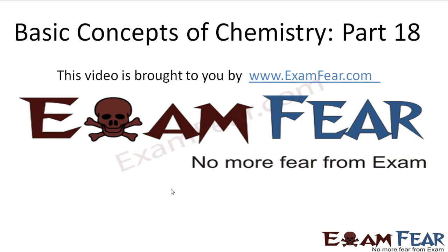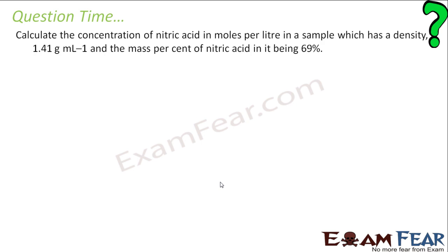Hello friends. This video on basic concepts of chemistry part 18 is brought to you by examfear.com — no more fear from exam. Before watching this video, please make sure that you have watched part 1 to part 17. Let's take one more example. You need to find the concentration of nitric acid in moles per litre in a sample which has a density of 1.41 grams per milliliter and the mass percent of nitric acid is 69%.